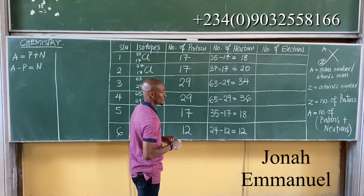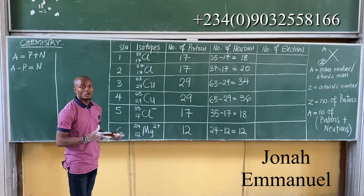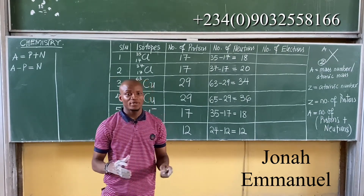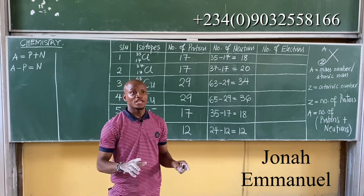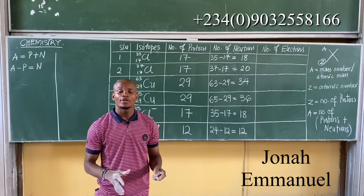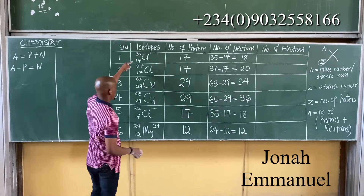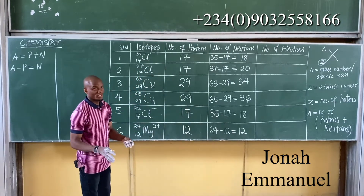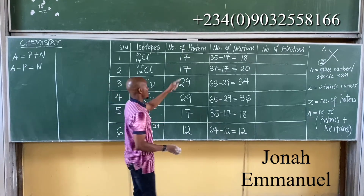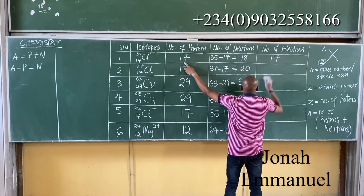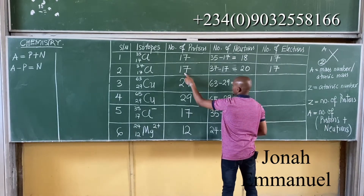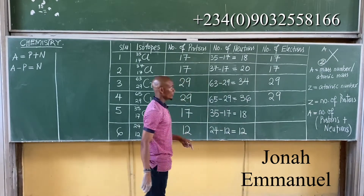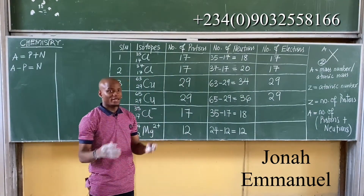Now let's get the number of electrons. For a neutral atom, the number of protons equals the number of electrons. A neutral atom is simply an atom that contains no charge — no plus or minus attached to it. So for the first four isotopes, which are all neutral atoms: if I have 17 protons, I have 17 electrons; if I have 29 protons, I have 29 electrons.